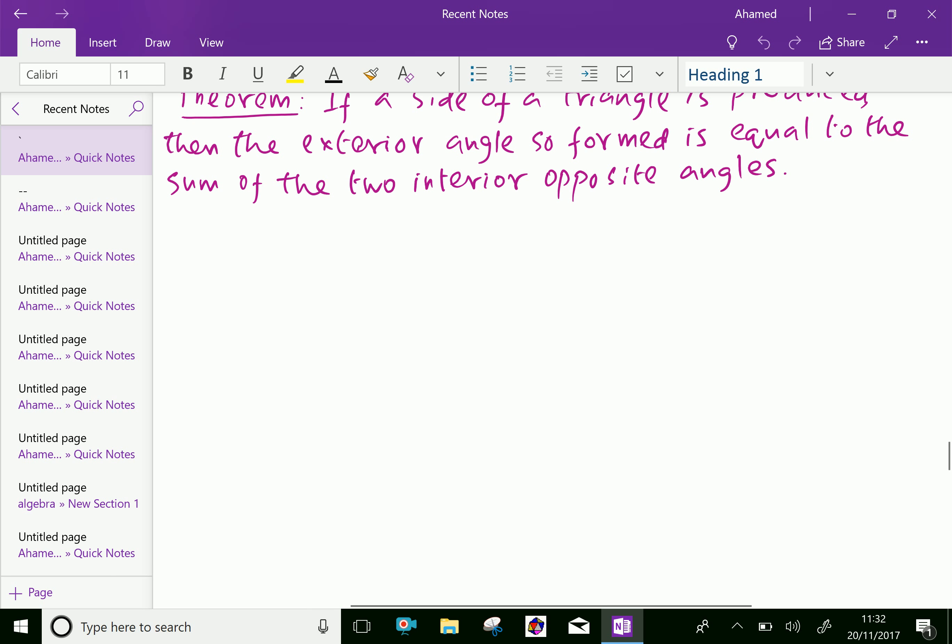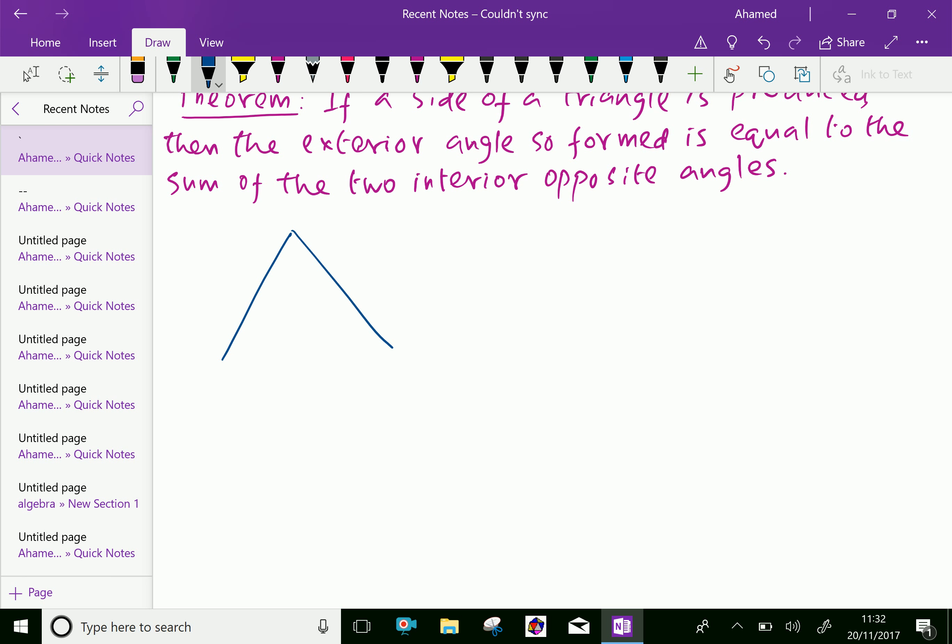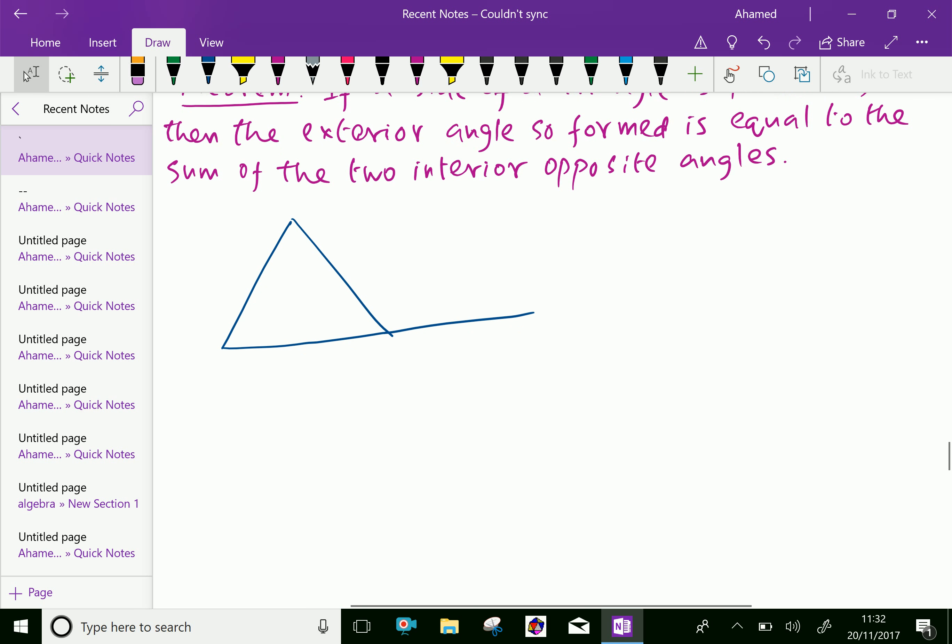Consider this figure. Here the triangle, that side is extended. The triangle vertices are named A, B, C, and BC is extended up to point D.